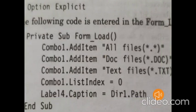After designing the form, we move to the code window. In the code window, the first part is the declaration section. In the declaration section, if we declare Option Explicit, all the variables are declared in the general declaration section — it is a global declaration. After Option Explicit is declared, move to the form load procedure.